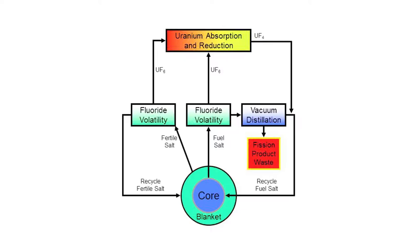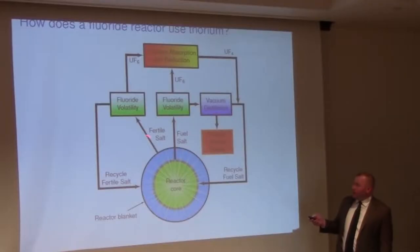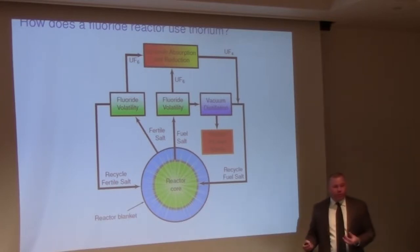The process by which we would use thorium in the reactor involves introducing thorium into an outer region of the reactor called the blanket. In the blanket, the thorium would absorb the neutron.